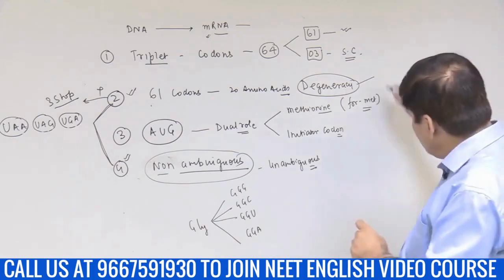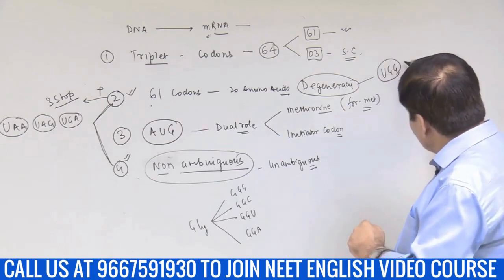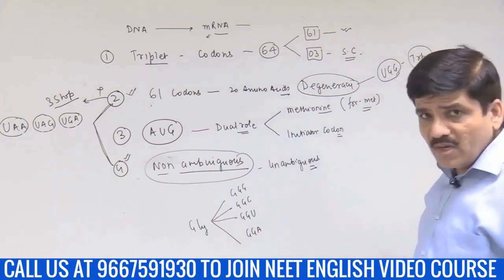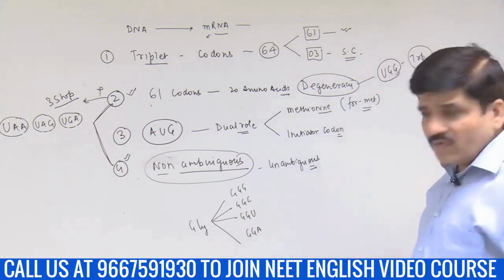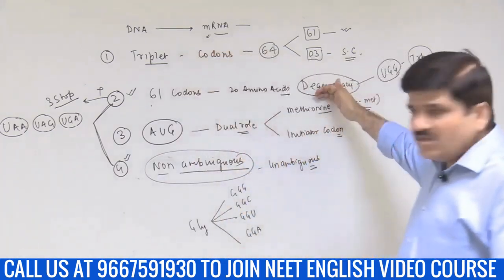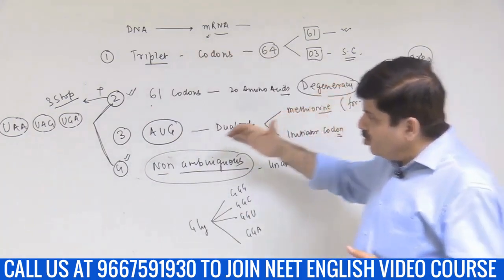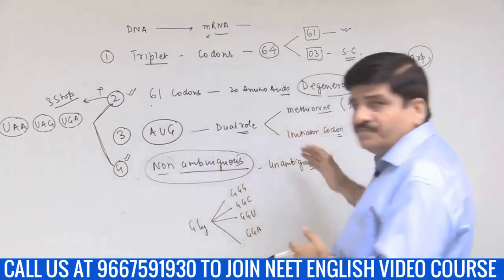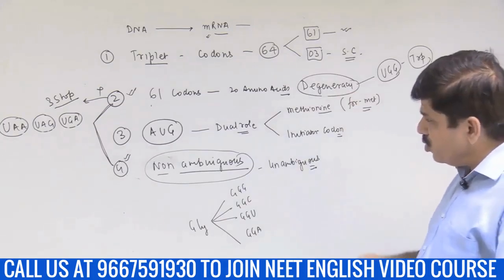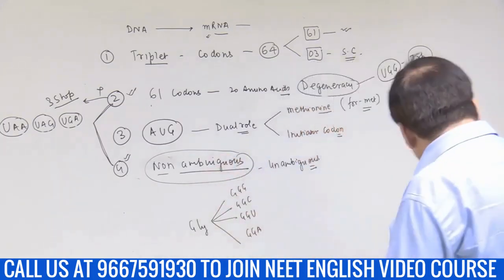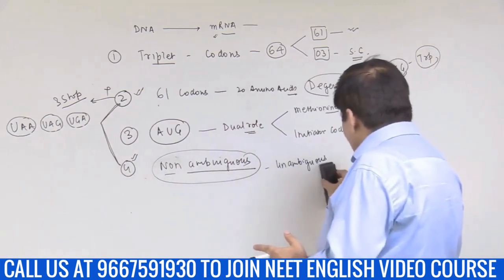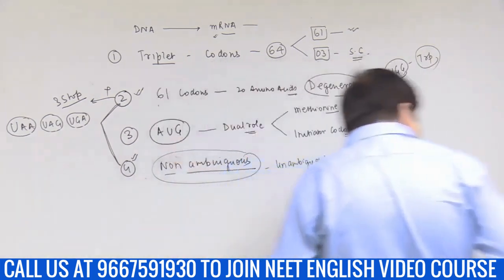Always try to remember UGG — this is the codon for tryptophan. So what do we know about genetic code? Number one, it is triplet. Number two, there is degeneracy with third codon degeneracy. We know AUG has a dual role — it codes for methionine and acts as an initiator codon. Number four, it is non-ambiguous. Now the fifth point, coming towards the end of the features of the genetic code described in your NCERT textbook.